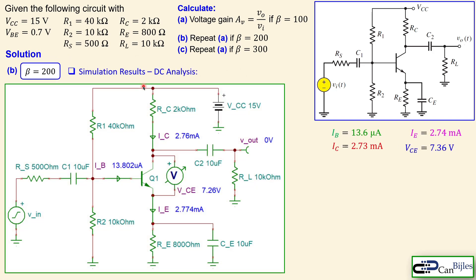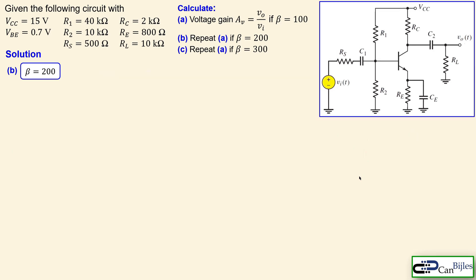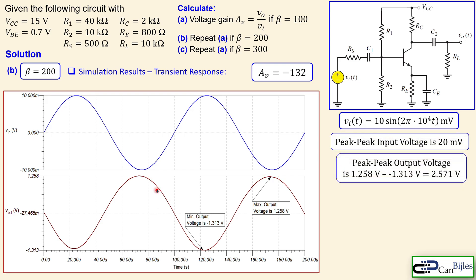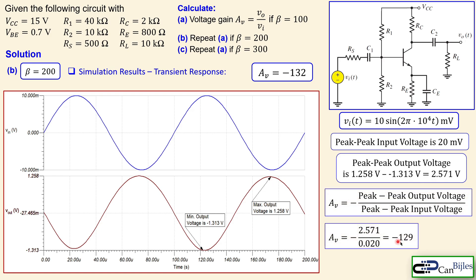DC analysis results for beta equal to 200 are very close to our calculations — for example, the base current is 30.8 simulated versus 30.6 calculated. In the transient response the output is again inverted, input is 10 mV peak at 10 kHz. The peak-to-peak output voltage is 2.571 V, giving a simulated gain of minus 129, very close to the calculated minus 132. There is also a small DC offset of approximately minus 27.5 mV visible in the simulation, reflecting more accurate BJT modeling.